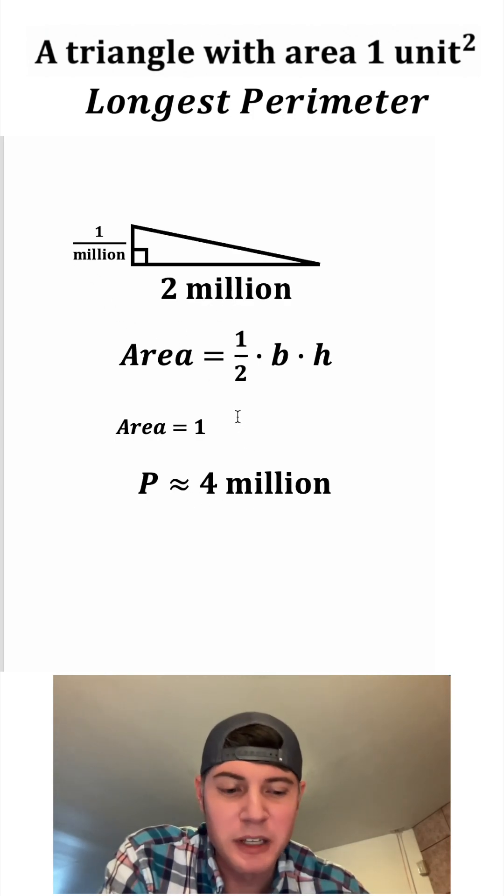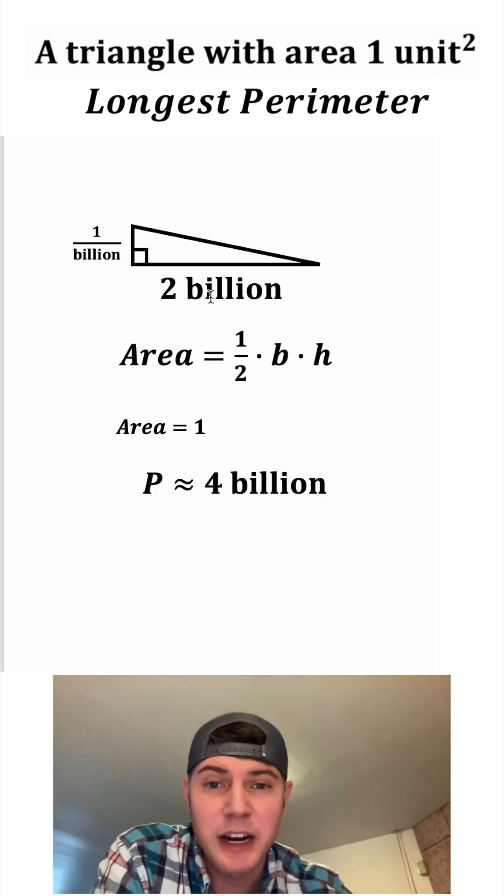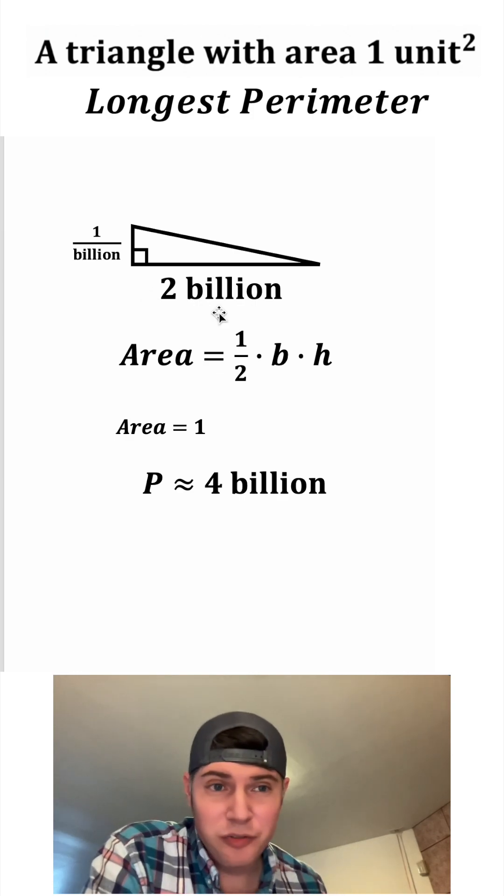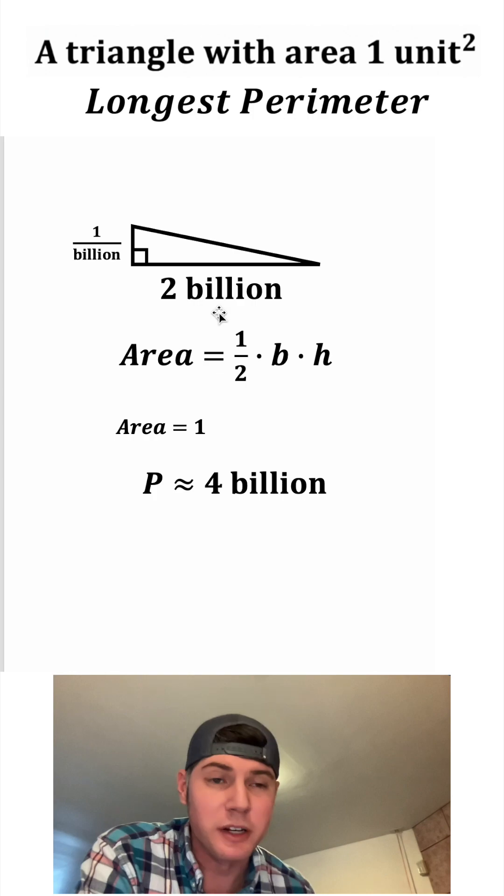And if we change these millions to billions, now we can see that we can make it four billion for the perimeter and still have an area of one. And you can keep doing this forever. So there really is no maximum value. The perimeter can be as long as we want.